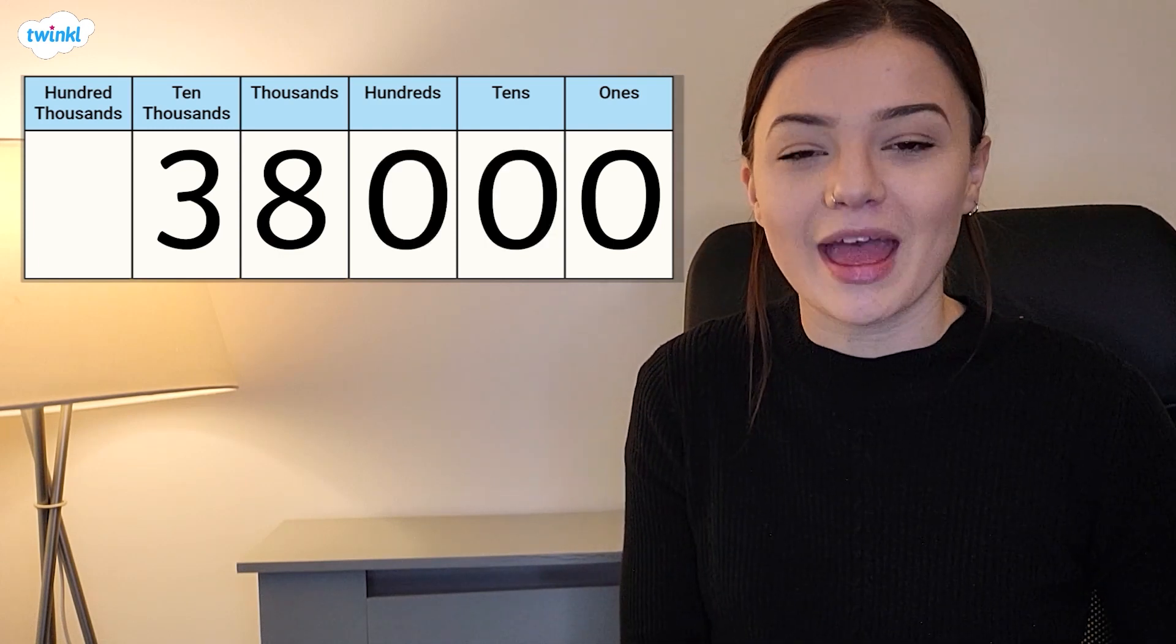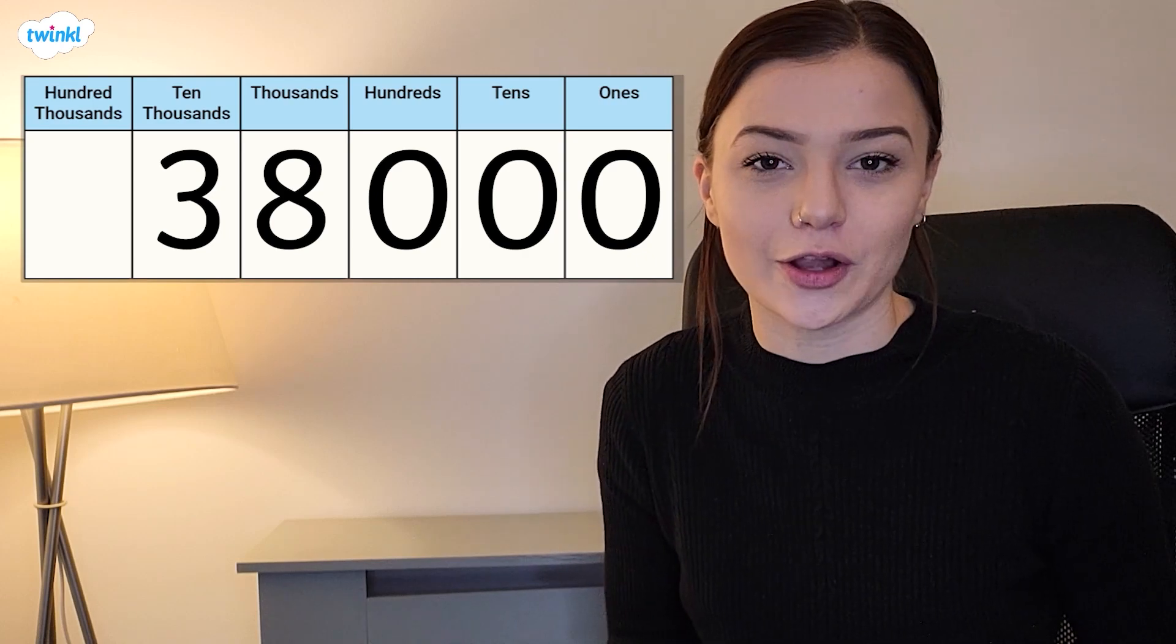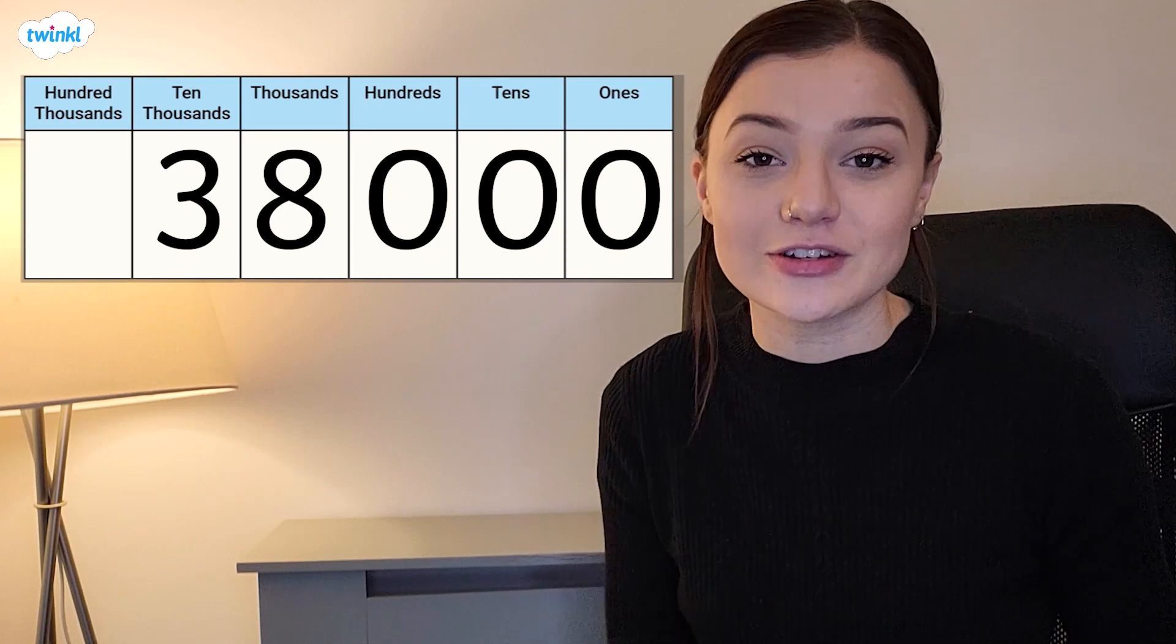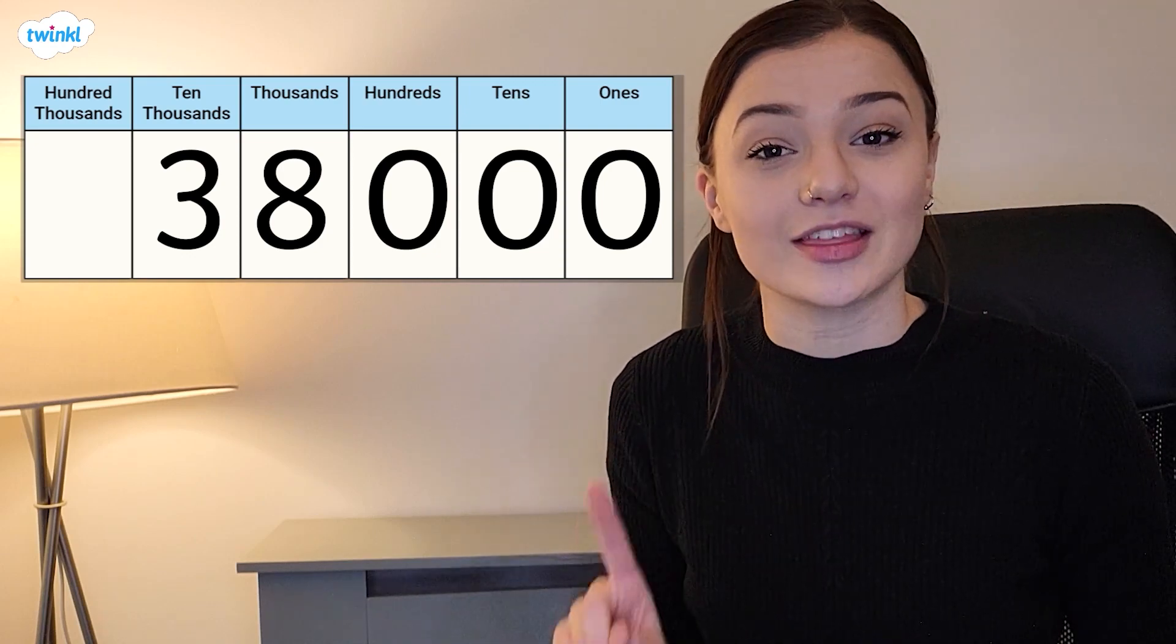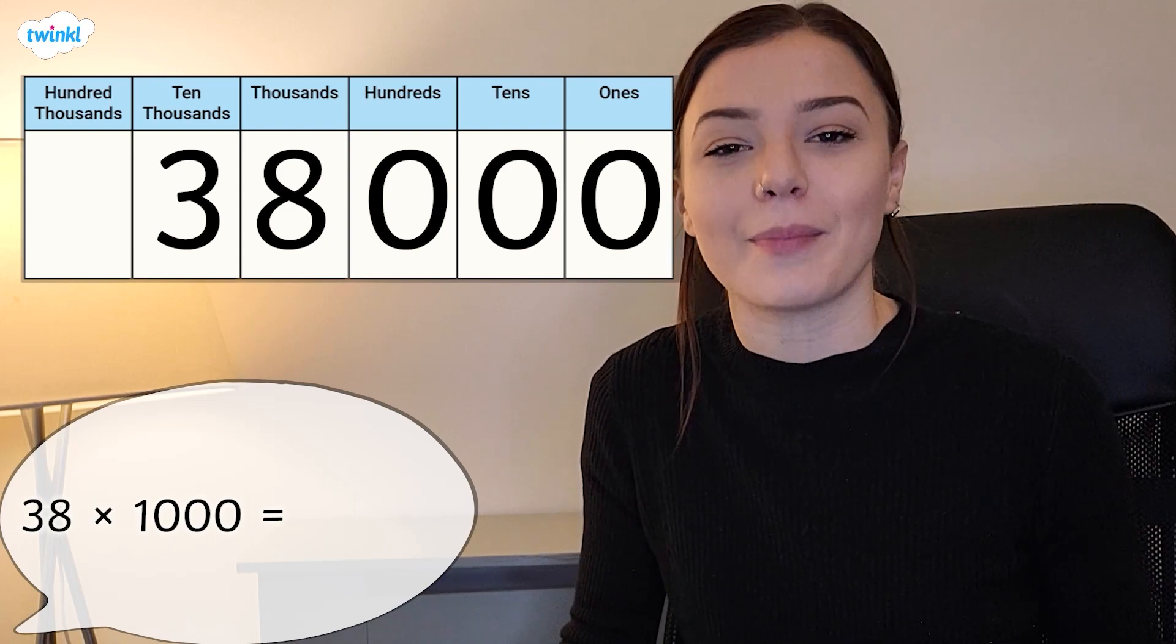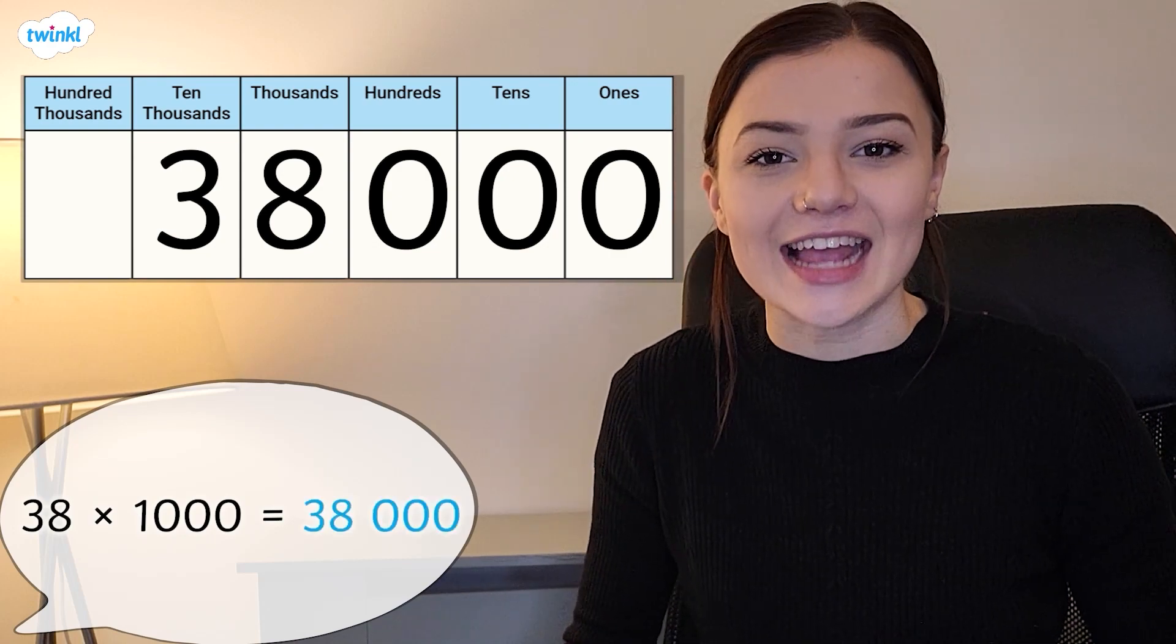Eight is in the thousands column and three is in the ten thousands column. It's really important that we remember to put our placeholders in the ones, the tens, and the hundreds column in order to keep the eight and the three in the correct columns. Therefore, 38 multiplied by 1000 is 38,000.